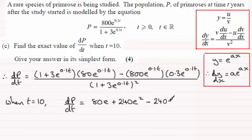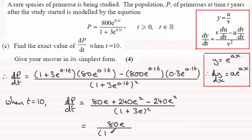And then that will be all divided by 1 plus 3e, all squared. So we've got 1 plus 3e, all squared. So simplifying this gives us just 80e. And that's going to be all over 1 plus 3e, all squared. And that's our answer in its simplest form, and as an exact value.